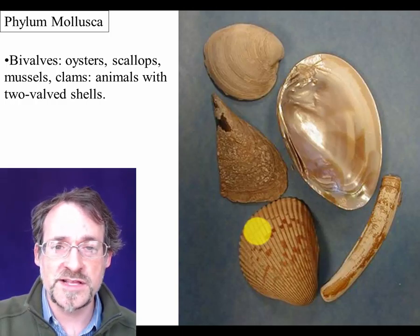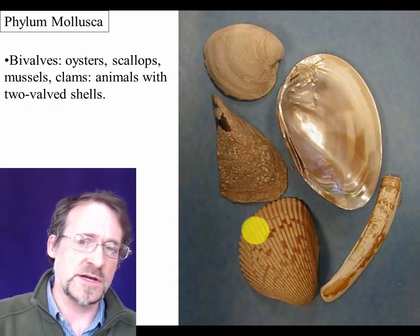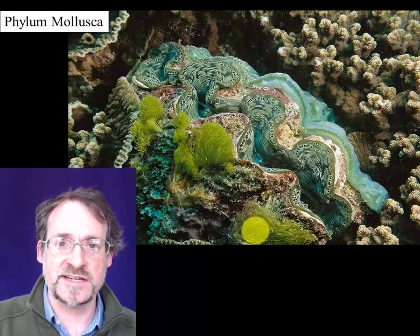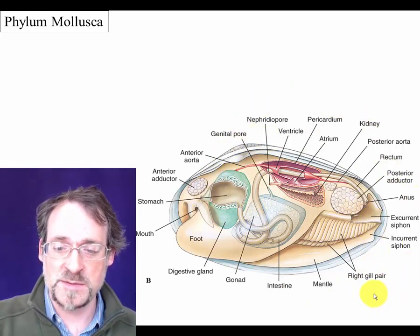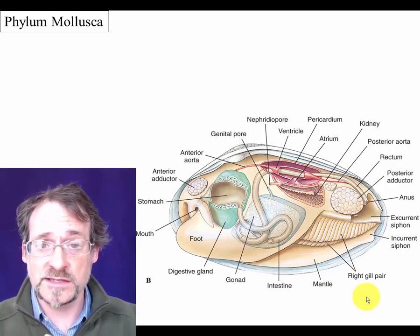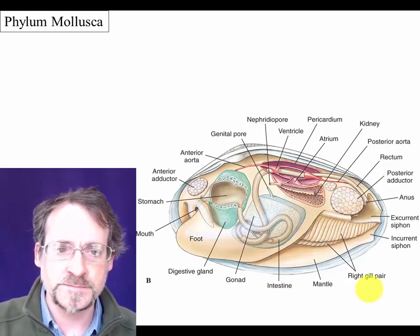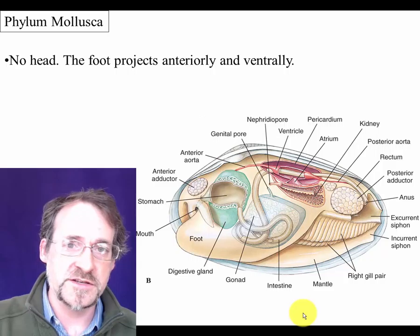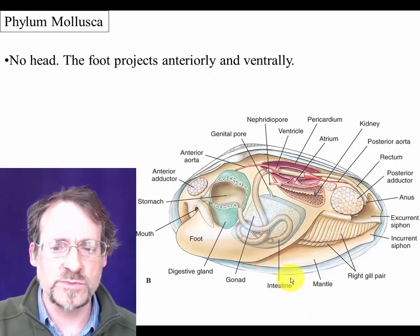Bivalves can be huge, like the giant clam that can be a meter across, or tiny — some mollusks are microscopic — but they all share the same basic body shape. It's difficult to recognize how these body structures are homologous to those of snails because they're so dramatically modified and rearranged. For one thing, there's no head in a bivalve — there is no central place where the nervous system is aggregated or concentrated, which makes them really hard to recognize.